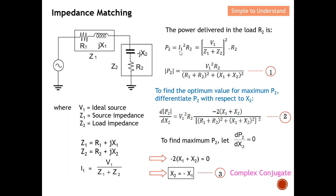Next, we calculate the power delivered to the load. Power is simply I squared times R. To find the power delivered to R2, I take I1 squared multiplied by R2. Since I1 equals V1 divided by Z1 plus Z2, squaring this and multiplying by R2 gives us the power P2. Expanding this, P2 equals V1 squared times R2 divided by the magnitude of Z1 plus Z2 squared. This is equation one.